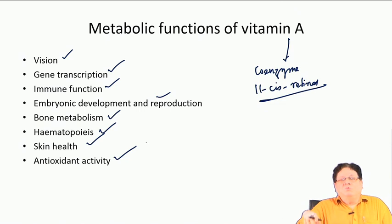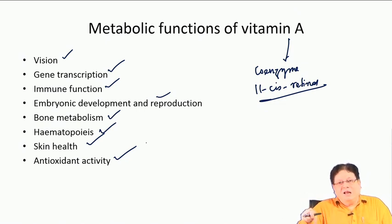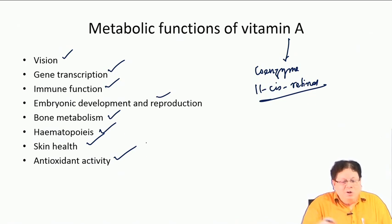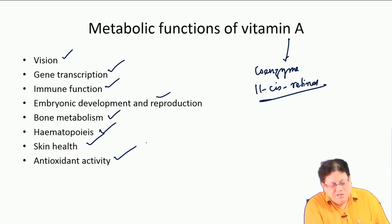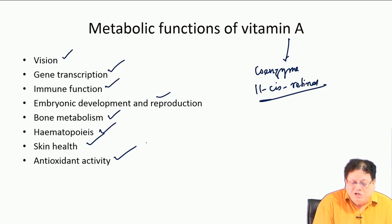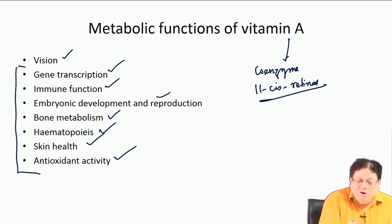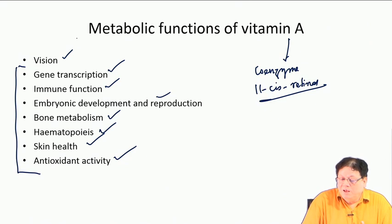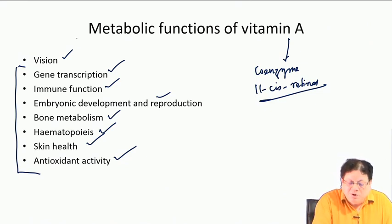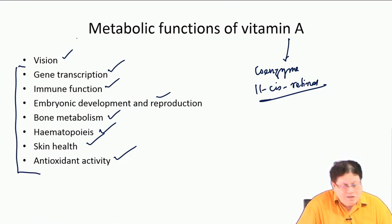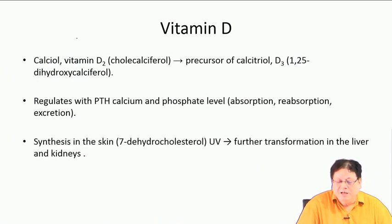Vitamin A can consume radicals very quickly — oxygen radicals can add to it. So apart from its coenzyme chemistry in vision biochemistry, it is also important in many other functions. A deficiency of vitamin A causes many types of problems.